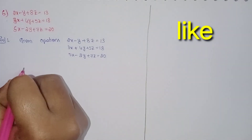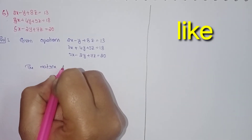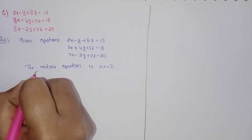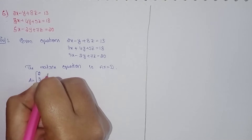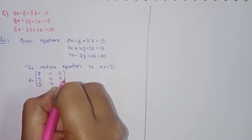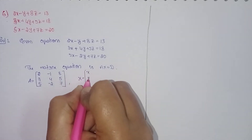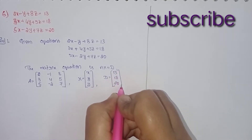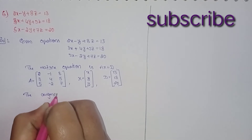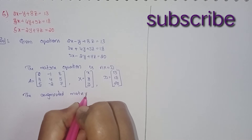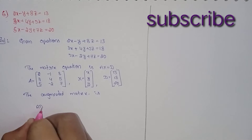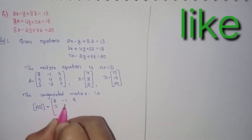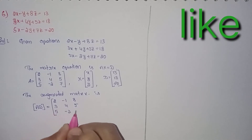Write this in the form of AX equal to D. The matrix equation is AX equal to D. Here A equals the matrix of x, y, and z coefficients; X equals the column vector [x, y, z]; and D equals [13, 18, 20]. Now the augmented matrix [A|D] equals the matrix with rows: 2, -1, 8 | 13; then 3, 4, 5 | 18; then 5, -2, 7 | 20.